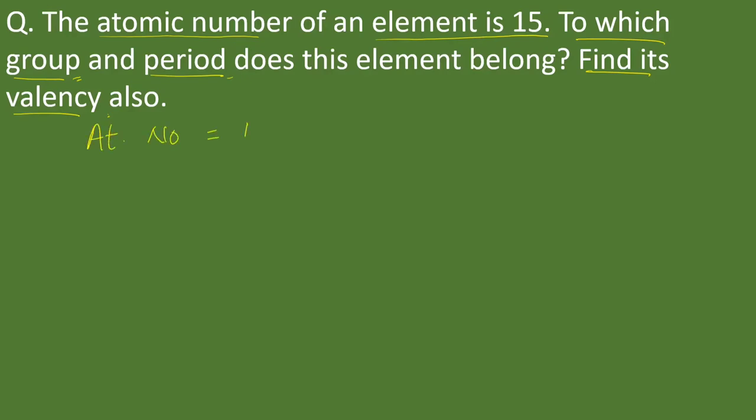First we need to write down the electronic configuration, that is 2, 8, 5. So 5 is the valence electron.